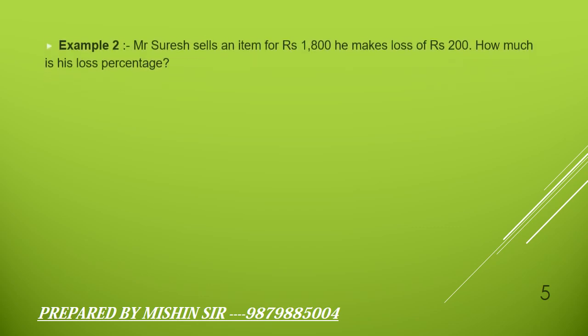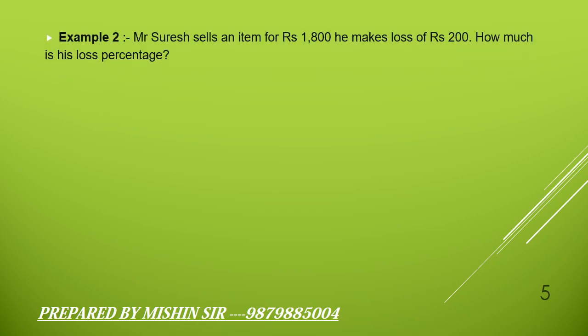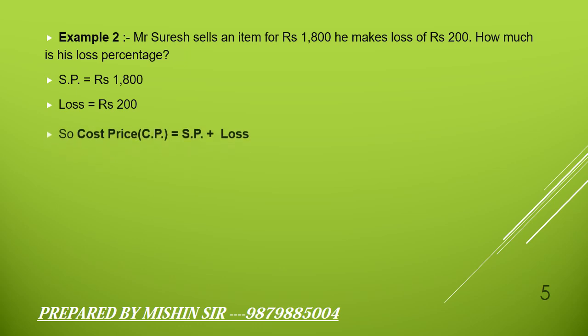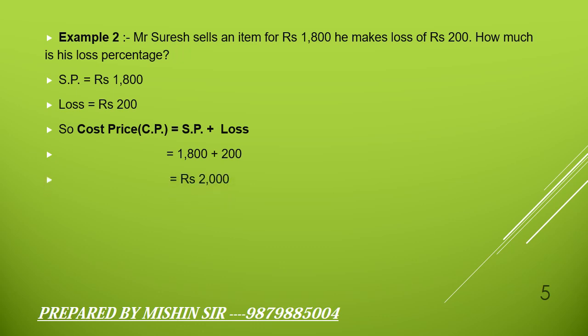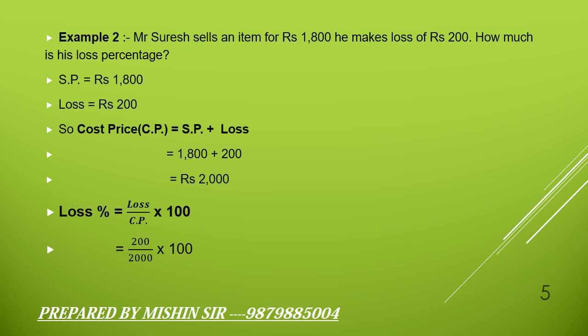Example 2: Mr. Suresh sells an item for rupees 1800 and makes a loss of rupees 200. How much is his loss percentage? Selling price = ₹1800, Loss = ₹200. Cost price = Selling price plus Loss = 1800 plus 200 = ₹2000. Loss percentage = loss upon cost price × 100 = 200 upon 2000 × 100 = 10%.